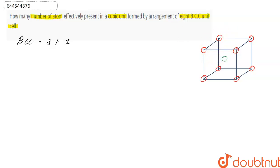Now the contribution of eight atoms at every corner is one by eight, and the contribution of the atom at body center is one. So total number of atoms that are effectively present in BCC unit cell are two.